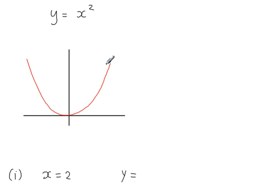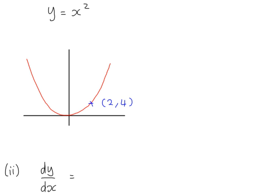This is the curve of y equals x squared. When x is equal to 2, y is equal to 2 squared, which is 4. So there is the point (2, 4) on the curve. The gradient function, or the derivative, of y equals x squared is dy/dx equal to 2x.